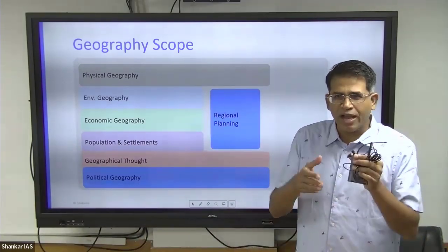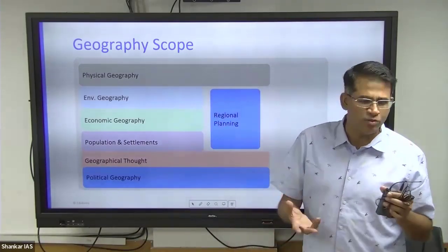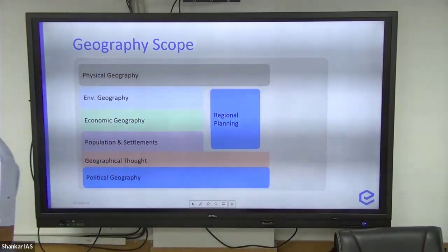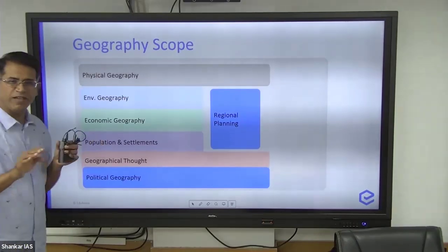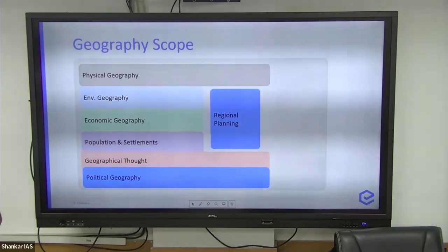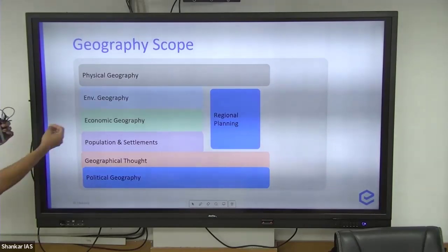Broadly, this is the scope of geography. Physical geography is all about nature, environment, ecosystems, biodiversity, soils, and forests. Economic geography covers development angles, population, and settlements.